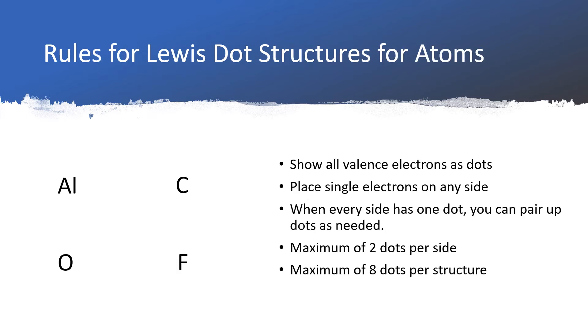Here's how you would draw the Lewis dot structures for some of these main group atoms. First of all, we have to figure out how many valence electrons they have. For main group elements, the number of valence electrons is equal to the last digit of the group number.